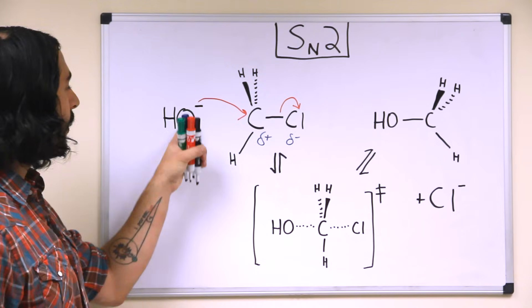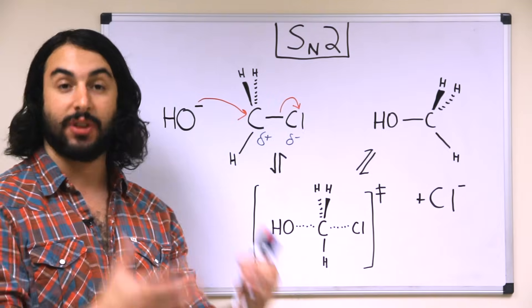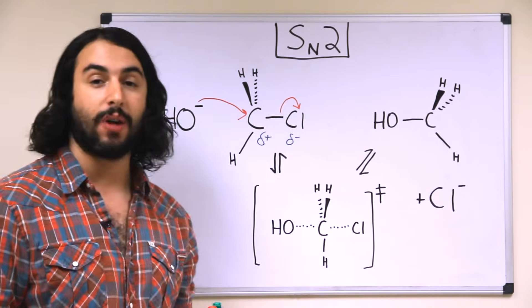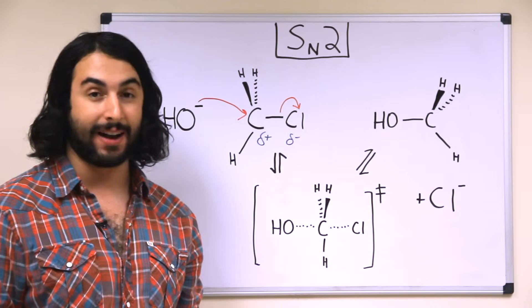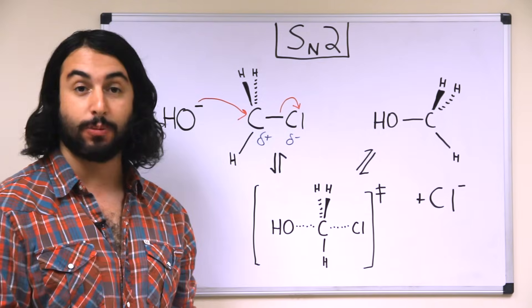So this first arrow goes from the oxygen atom, because that's the electron rich atom, that's the one with the negative charge. So the arrow starts there and is going to go directly to the carbon atom, because that is the electron deficient site, that's where there's the partial positive charge.